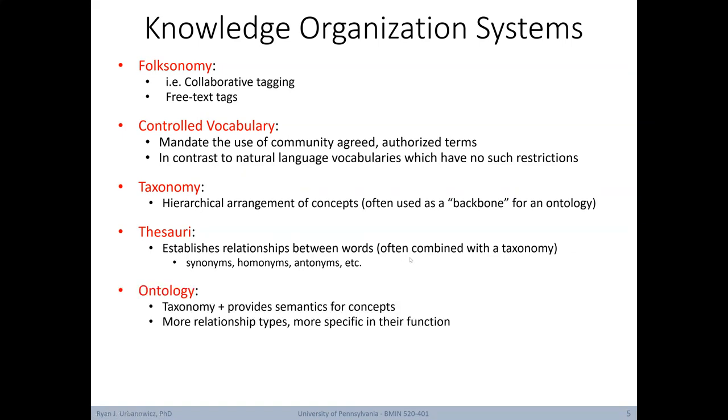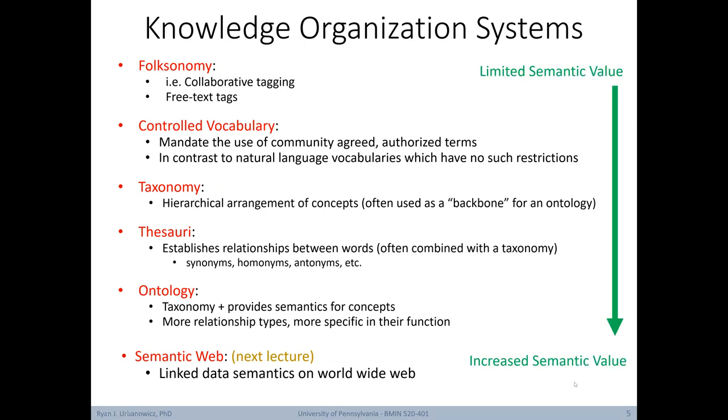Next we have the ontology. Starting from a taxonomy, an ontology adds semantics for concepts. Ontologies often include more relationship types and have more specifics laid out in terms of how they function. Lastly, we'll mention a semantic web. This will be covered in more detail in our next lecture. Briefly, a semantic web seeks to link the semantics of terms across the World Wide Web. This brief overview ranks these knowledge organization systems from limited to increased semantic value.